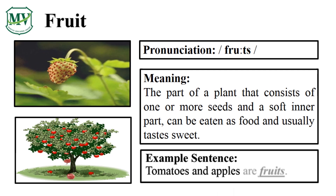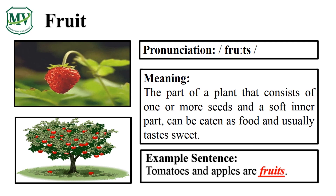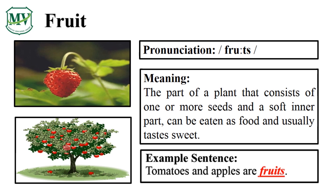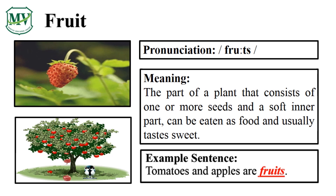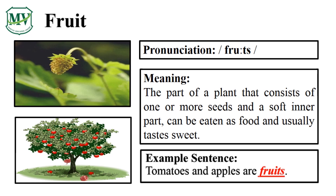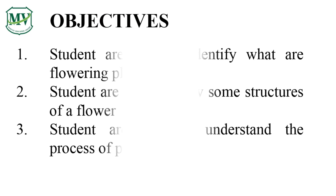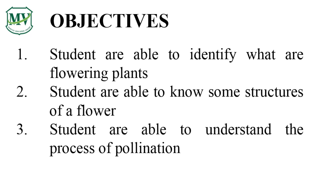Tomatoes and apples are fruits. Can you read the sentence on your own? Amazing. In this lesson, you will learn how to identify flowering plants, name some parts of a flower, and understand the process of pollination.